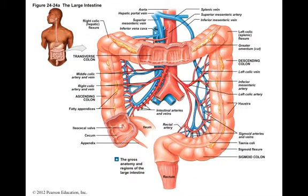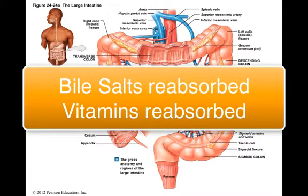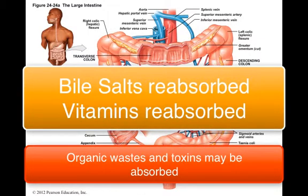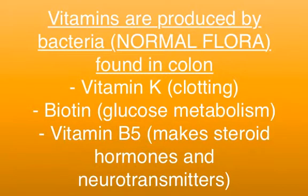In addition to water, the large intestine absorbs bile salts and vitamins, and organic waste products such as urobilinogen and various toxins generated by bacteria. Vitamins are also generated by bacteria residing in the colon — called normal flora — which are resident bacteria that benefit from living there without harming us. These bacteria generate several vitamins during their metabolic processes: vitamin K (needed for clotting factors), biotin (needed for glucose metabolism), and vitamin B5 or pantothenic acid (needed to make steroid hormones and neurotransmitters), which we then absorb.